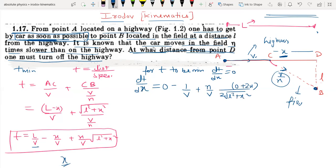This equals 0, so 1 by V equals - canceling the 2s - NX by V times square root of L square plus X square.